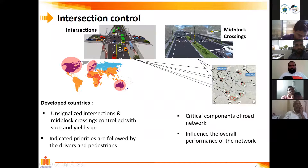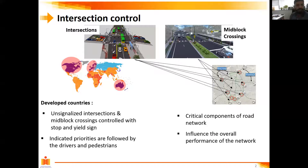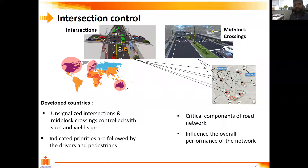In most developed countries, unsignalized intersections and mid-block crossings are controlled with stop and yield signs. The stop sign is octagonal in shape, radiant in color, with the wording 'stop' — you are supposed to stop completely and then proceed through the intersection. The yield sign is a triangular sign board, the inverse of usual warning signs, indicating the driver has to slow down, look for possible available gaps, assess safety, and then proceed.